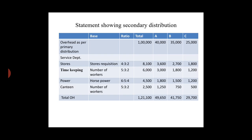Store department cost of 8,100 distributed in ratio 4:3:2 — giving Department A 3,600, B 2,700, and C 1,800. Timekeeping department cost 6,000 distributed in ratio 5:3:2 to production departments on the basis of number of workers. Power department distributed on the basis of horsepower in ratio 6:5:4.